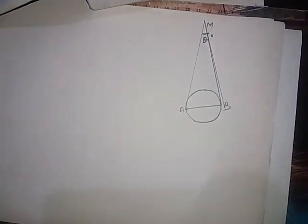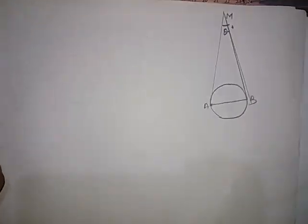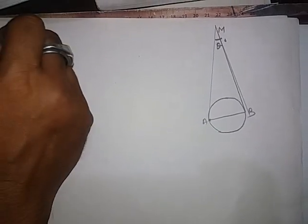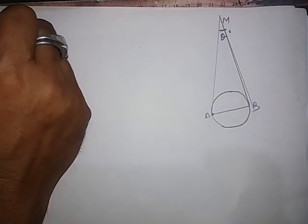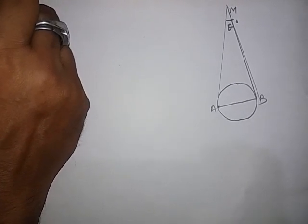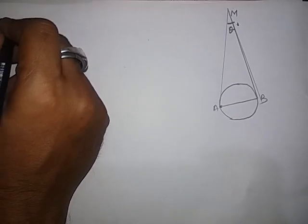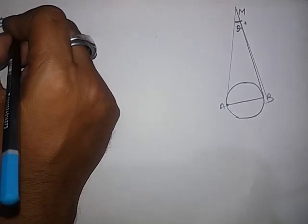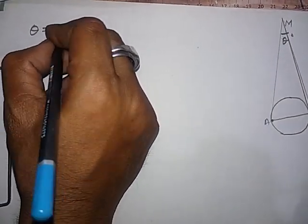This is the position of the moon. And angle subtended by this is theta. Now, theta is how much? Theta is 1 degree 54 minutes. Convert degree into minute.